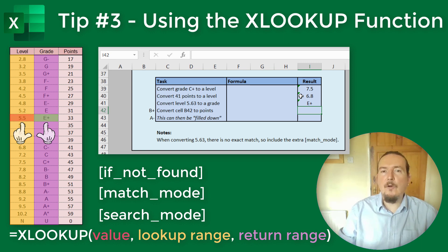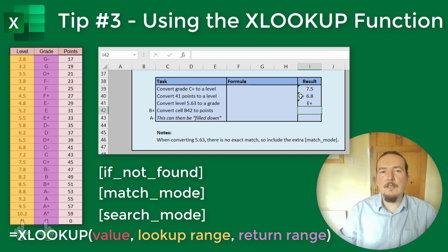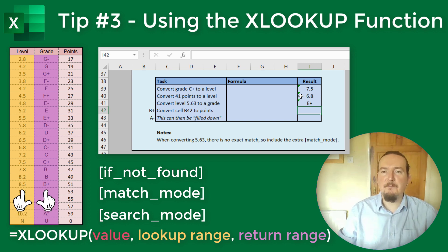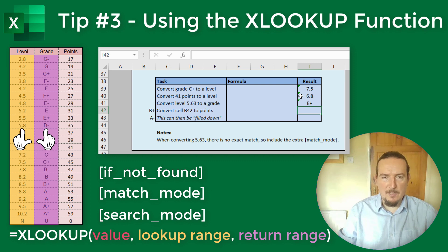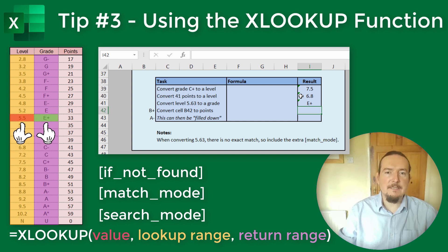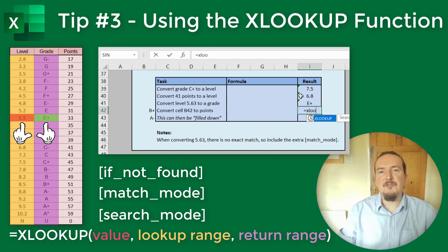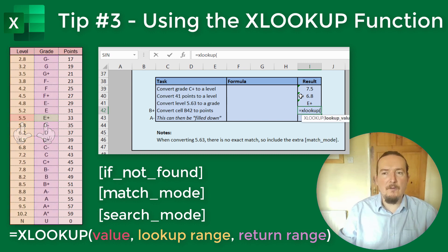The final optional field is for search mode. If you set this to minus 1, XLOOKUP is going to search backwards from the bottom of the list and work upwards, rather than the default way of working from the top of the list and going down. But I do not need to do that right now, so I am just going to leave it off.